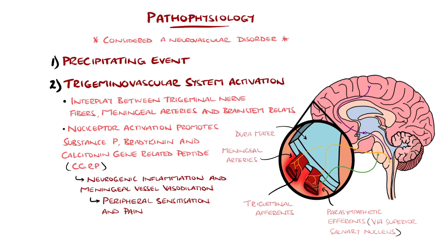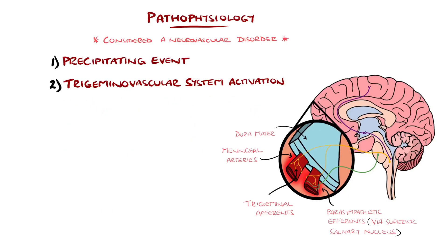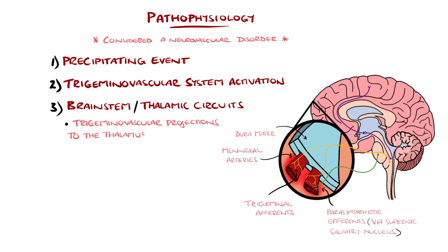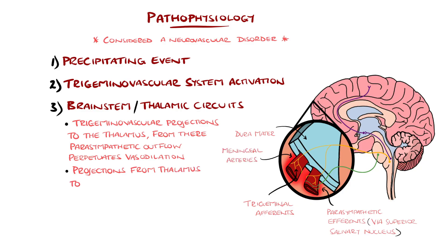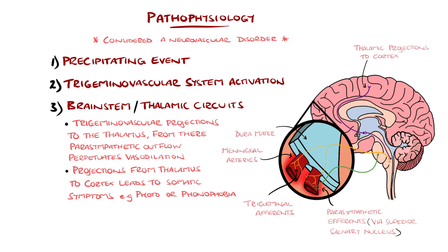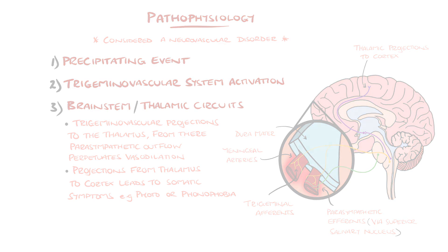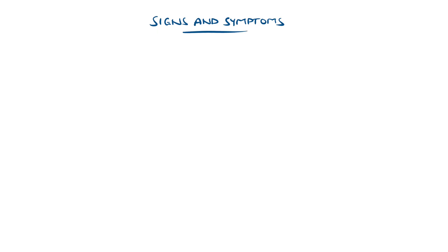These signals travel to the brainstem, including the spinal trigeminal nucleus, with trigeminovascular projections to the thalamus, and from there, parasympathetic outflow from the superior salivary nucleus, further perpetuating vasodilation, as well as projections from the thalamus to the cortex, which may contribute to associated symptoms of migraine like photo- and phonophobia. This process does take time, which is why we see the multiple stages in migraine.